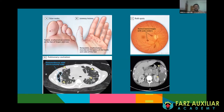These are the peripheral embolic sequelae of infective endocarditis. Osler nodes are painful erythematous nodules on the tips of the fingers and toes. Janeway lesions are non-painful erythematous macules on the palms of the hands and soles of the feet. Roth spots are retinal hemorrhages with pale centers. Fundoscopy is an important part of working up a patient with infective endocarditis. Nodular opacities in the lung with the halo sign suggest pulmonary emboli, and splenic infarcts are also known.